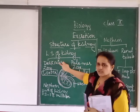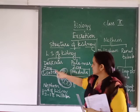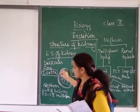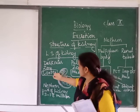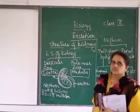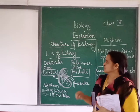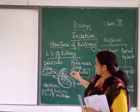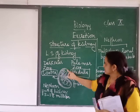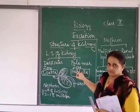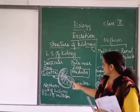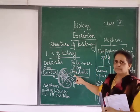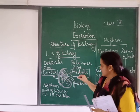The outer dark zone is called the cortex. So the outer dark zone of kidney is the cortex. When we go internally, the pale inner zone is called the medulla. So you can see the labeling: cortex and medulla.